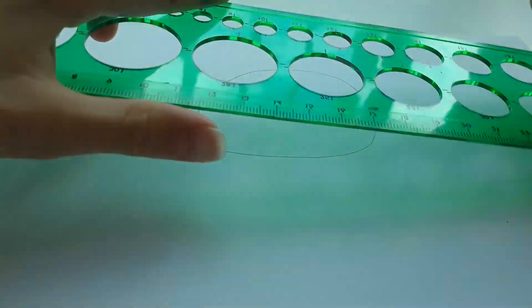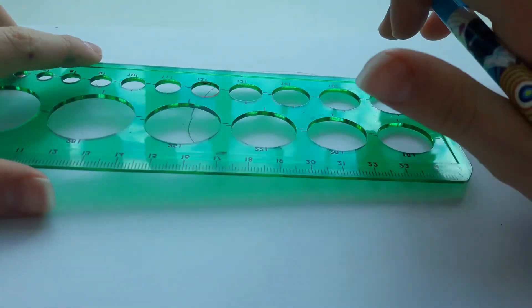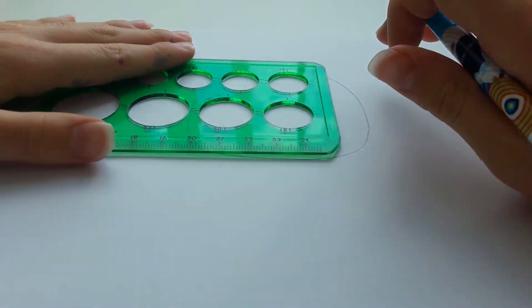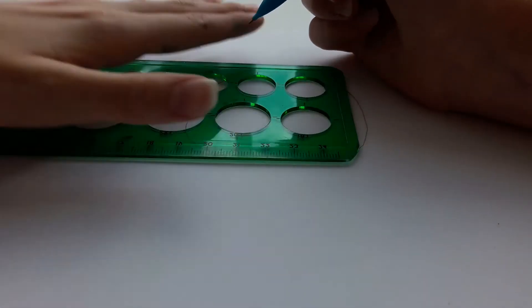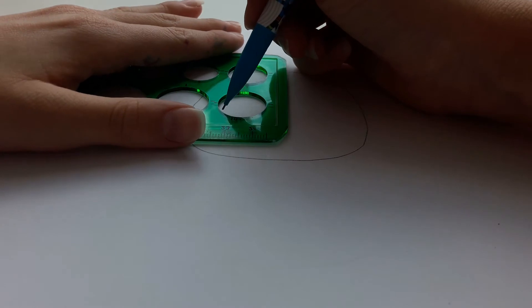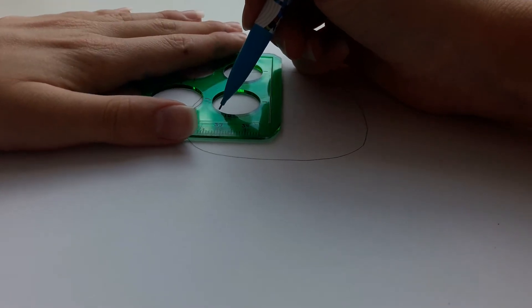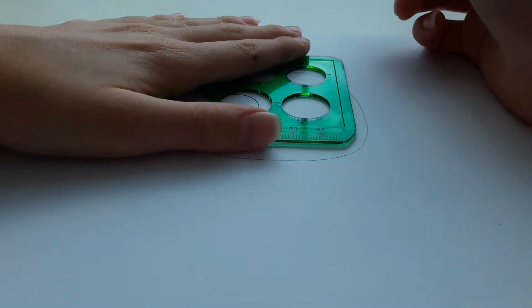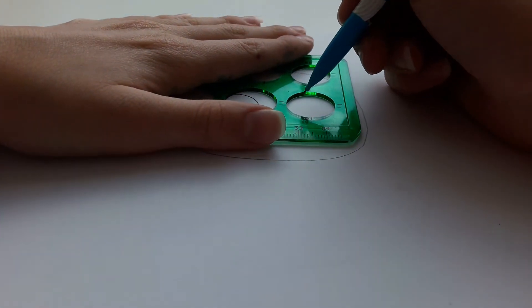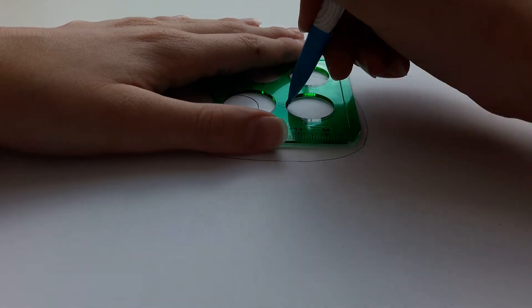I'll continue by doing the eyes. As I showed in the beginning of the video, I'm going to use a circle ruler to do my eyes. So one nice big and round eye here and another eye right here.